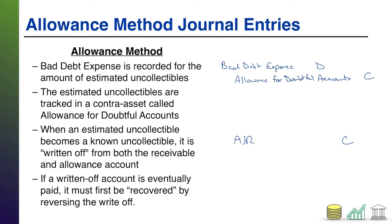Since we're not getting cash, the debit — instead of cash — is going to be the allowance for doubtful accounts. What's the logic? The allowance for doubtful accounts is tracking what we think we won't get paid. So to the extent that some of it has come true, the AR goes away.